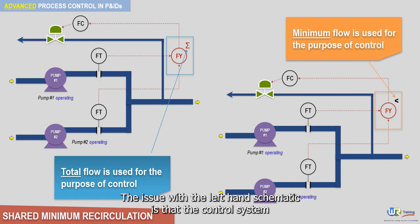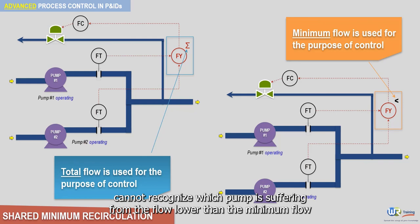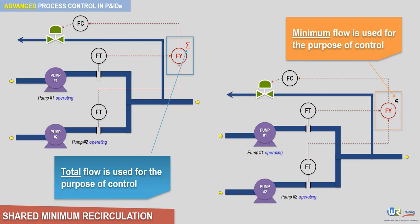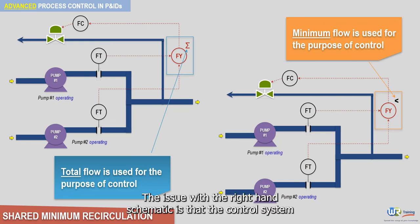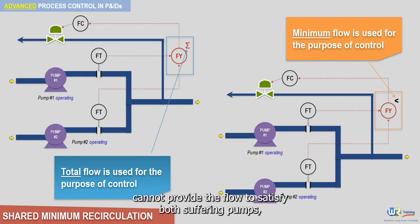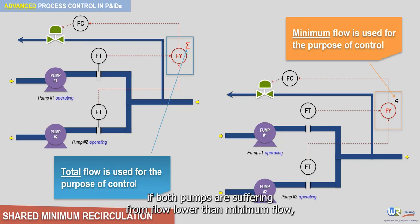The issue with the left-hand schematic is that the control system cannot recognize which pump is suffering from flow lower than the minimum flow. The issue with the right-hand schematic is that the control system cannot provide the flow to satisfy both suffering pumps if both pumps are suffering from flow lower than minimum flow, but with uneven difference to the minimum flow.